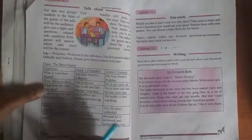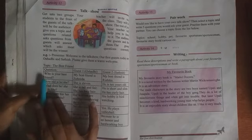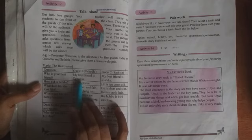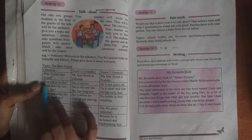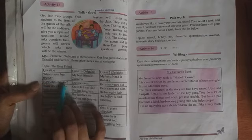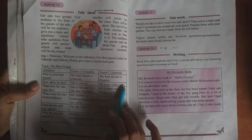Last day we learned how to use these question words. Today you have to use the question words and make questions like this. Who is your best friend? My best friend is Subida. My best friend is Rishika. How old is he? She is 11. He is 10 years old.